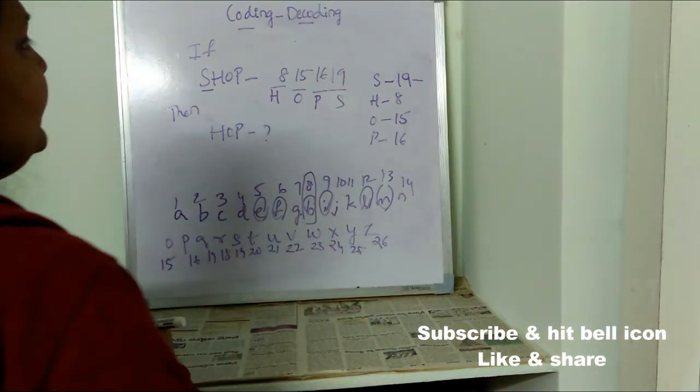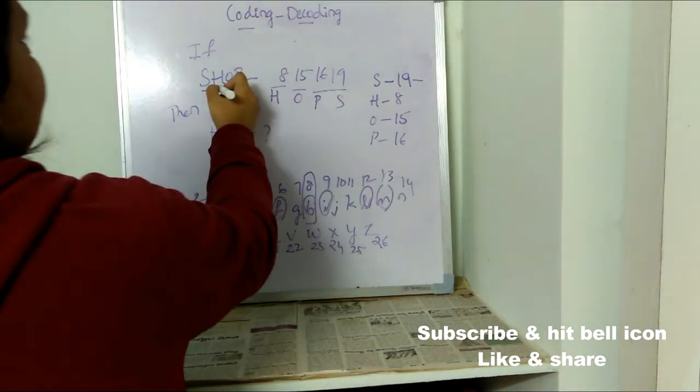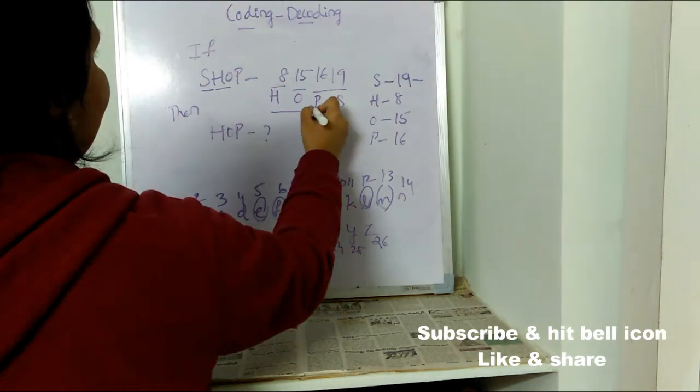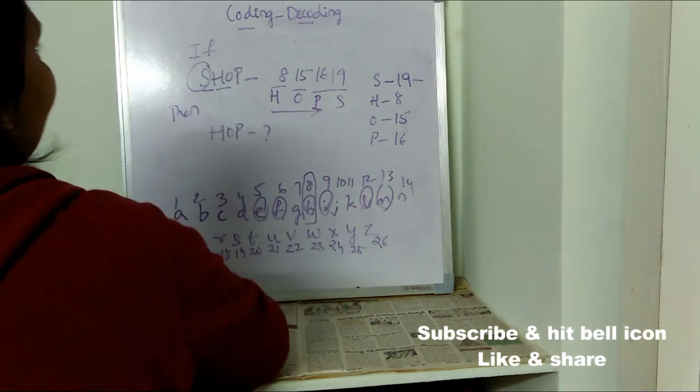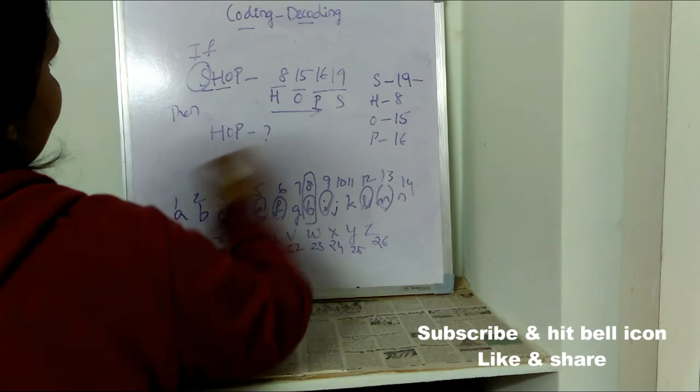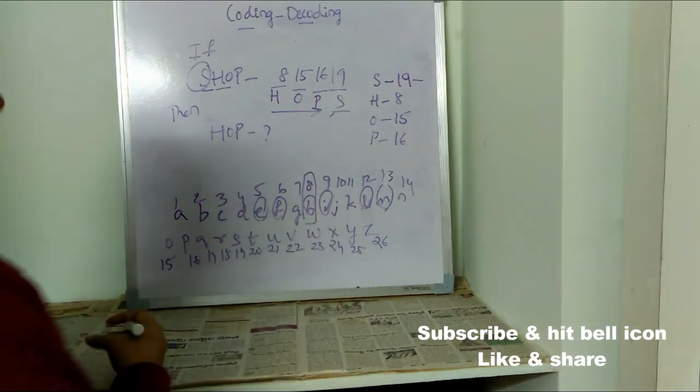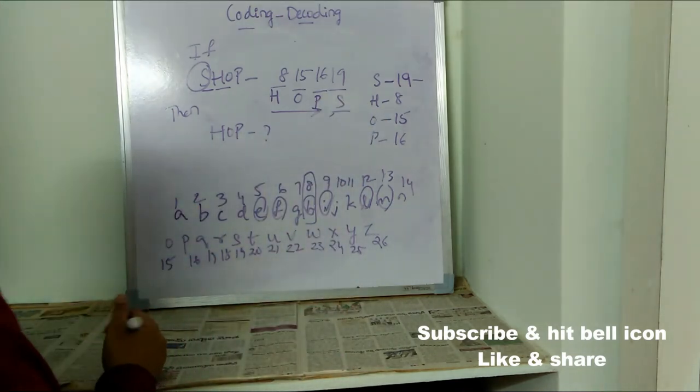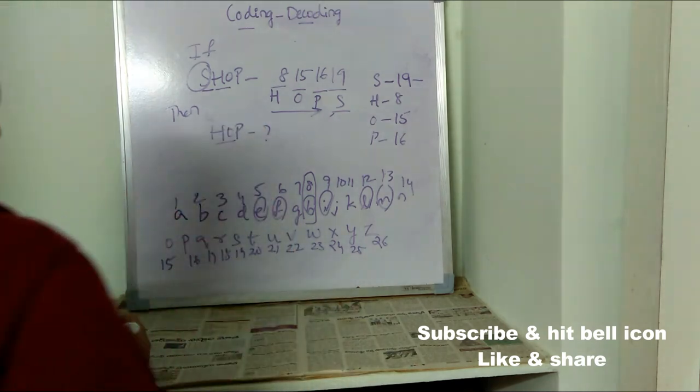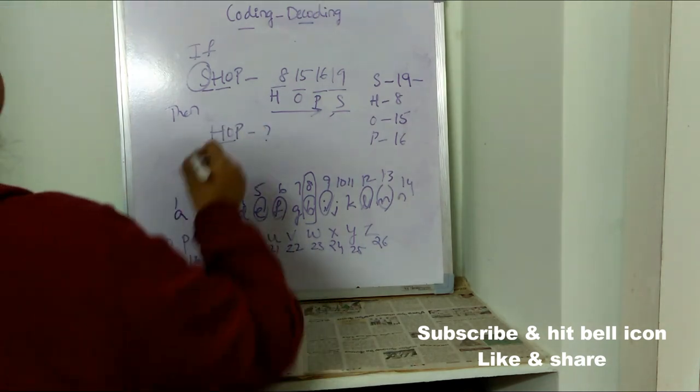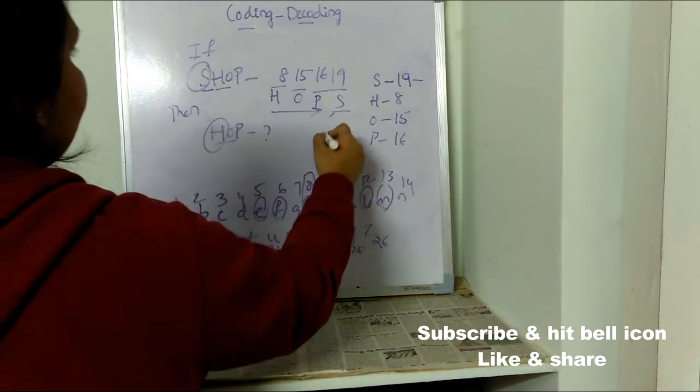So what did he do? He have written HOP linearly and he have shifted the first letter to last. So now what we need to do: write HOP, we need to first shift the first letter to the last position and rest we need to write linearly.